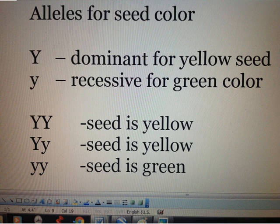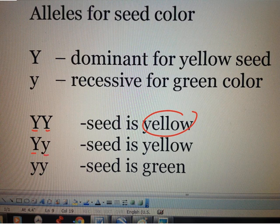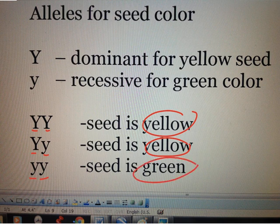So when a dominant yellow allele pairs with another dominant yellow allele, the seed color is, of course, yellow. When a dominant yellow allele pairs with a recessive green allele, the seed color is yellow because the yellow allele is dominant over the recessive green allele. When the recessive green allele pairs with another recessive green allele, the seed color is green. It is only when a recessive allele pairs with another recessive allele that the recessive character can be expressed.